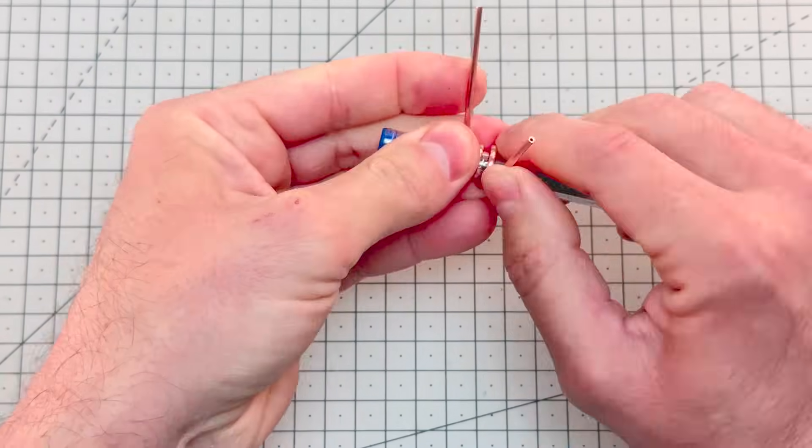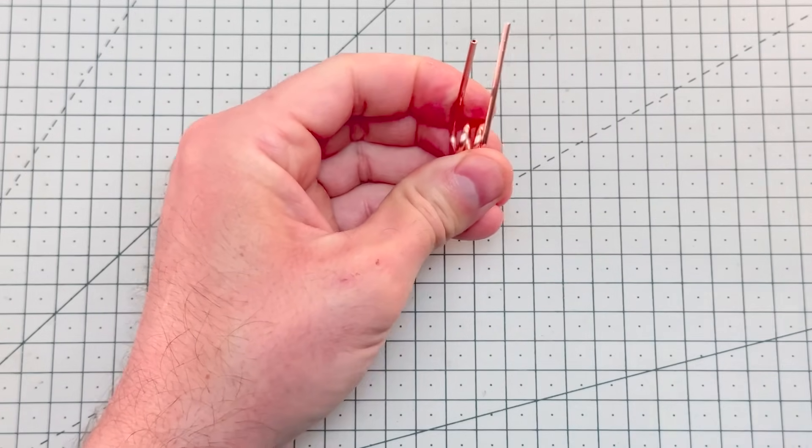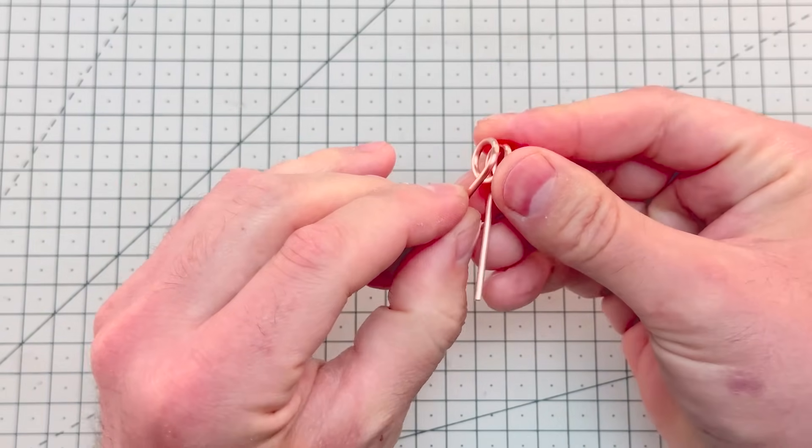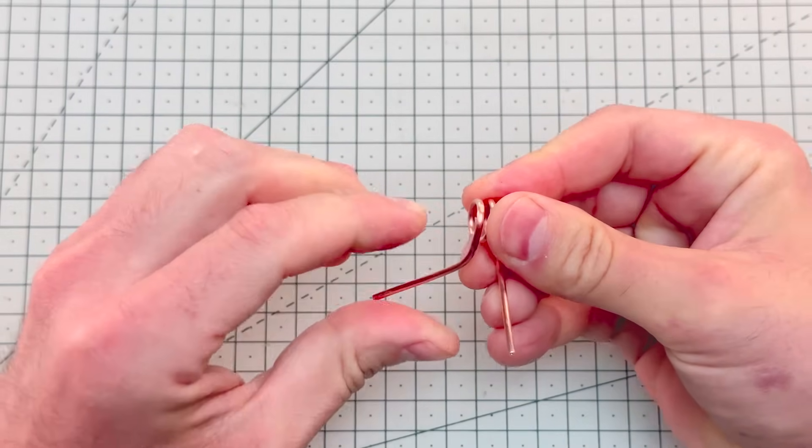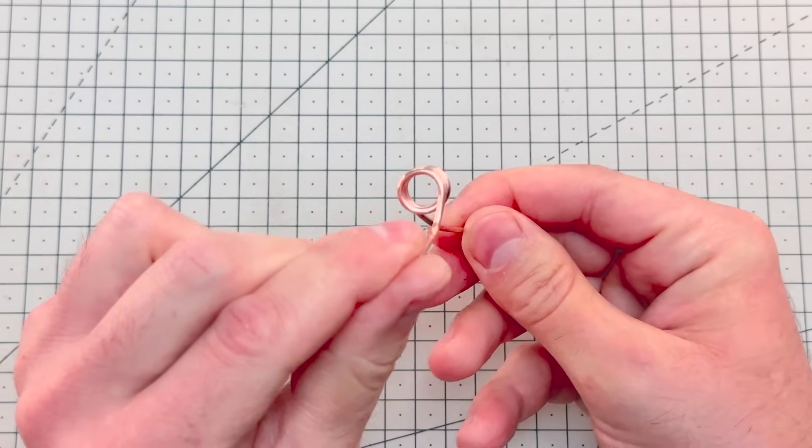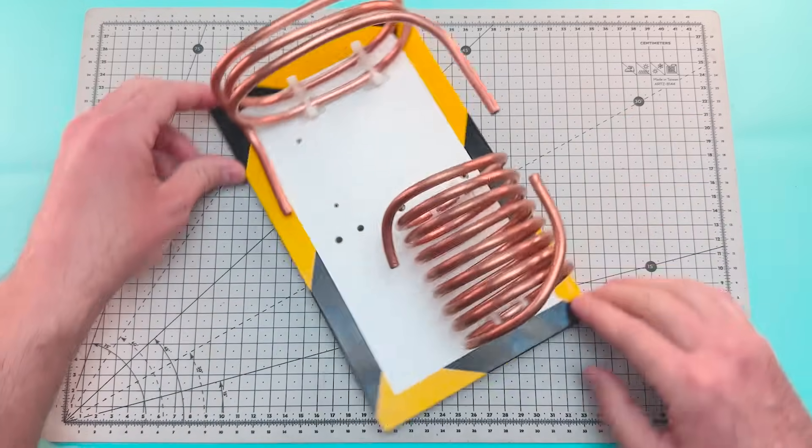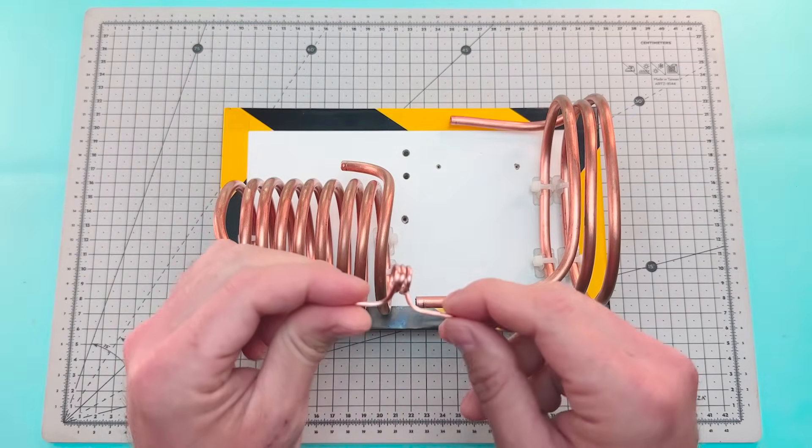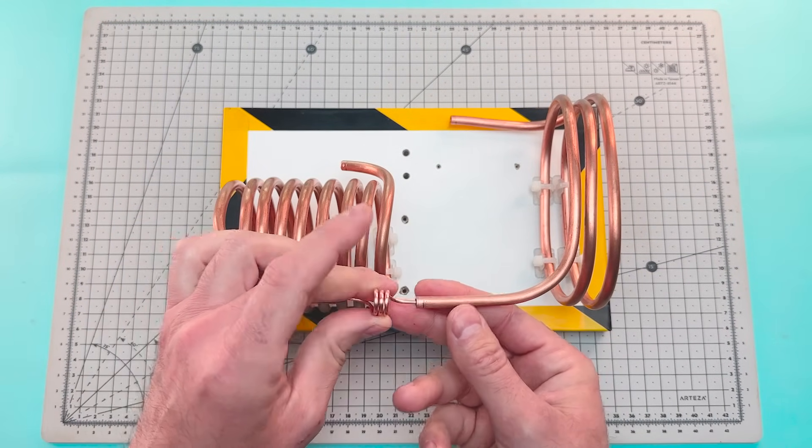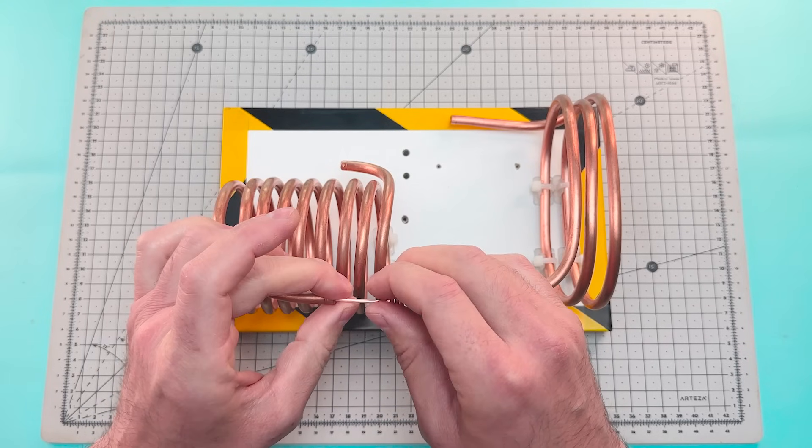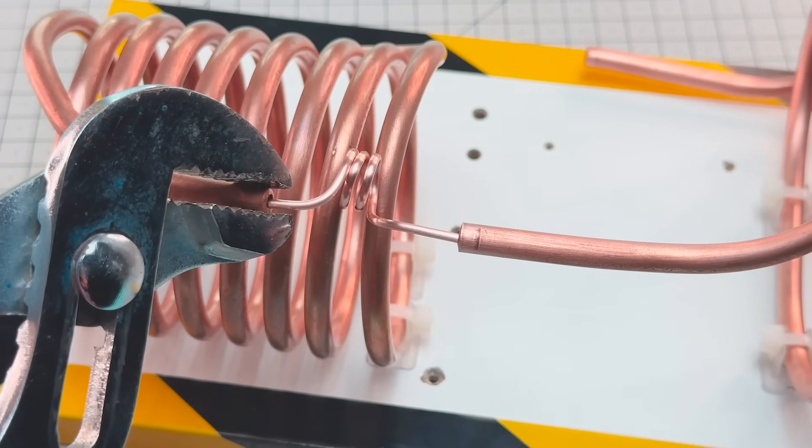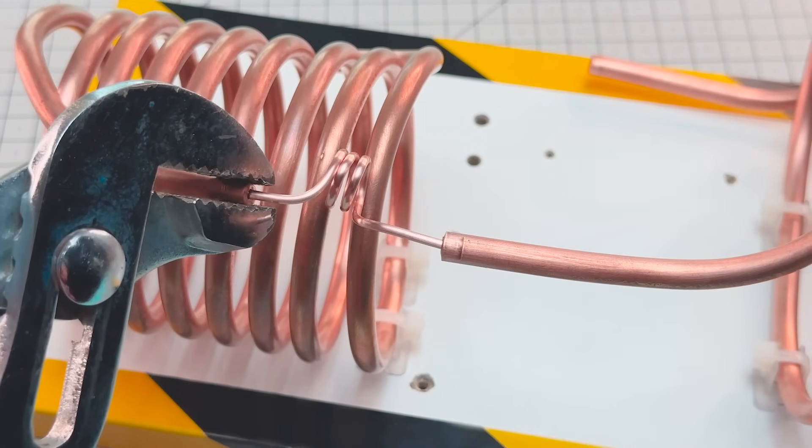We'll bend it using a pen. Two or three turns will be enough. We're going to insert the capillary tube into the end of the condenser and the other side into the evaporator. Flatten the two sides to fix the capillary.